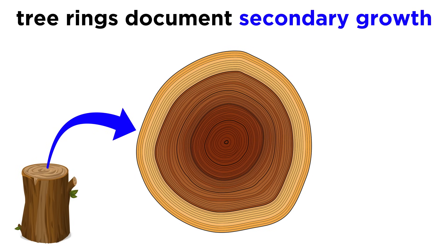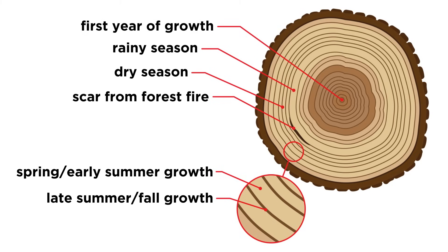The best example of secondary growth is the annual growth rings of a tree trunk. If you look at the rings, you can see each growing season represented by a broad band of expansion in the tree's trunk. This is secondary growth.